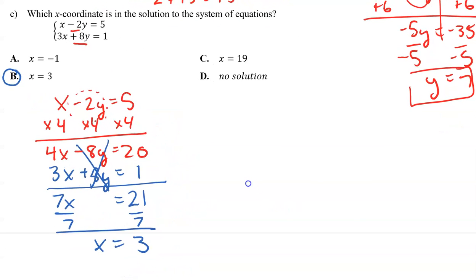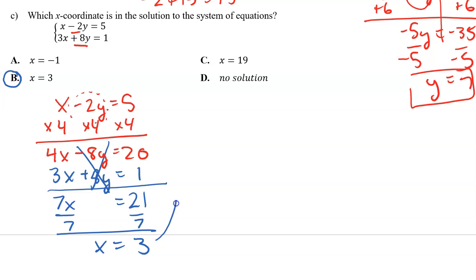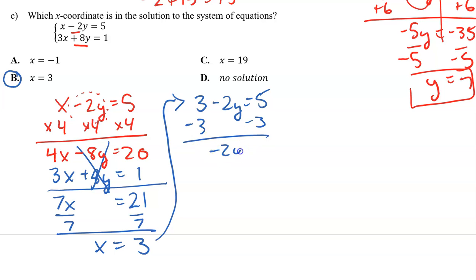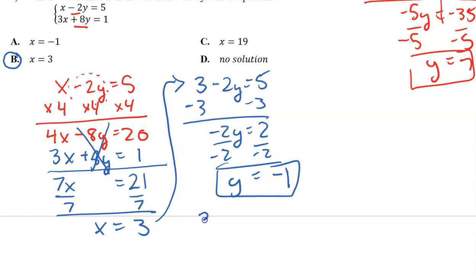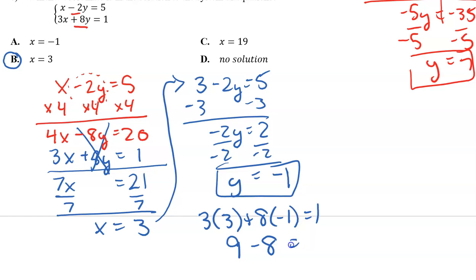Now I like to check my work. So I'll go back to that first equation and put in 3 for x: 3 minus 2y equals 5. Subtract 3 from each side: negative 2y equals 2. Divide both sides by negative 2: y equals negative 1. I'll check that in my second equation: 3 times 3 plus 8 times negative 1 should equal 1. 9 minus 8 equals 1. It checks. Even though I had my answer earlier, it's always good to finish the problem and check your work. And that is it for Day 5.